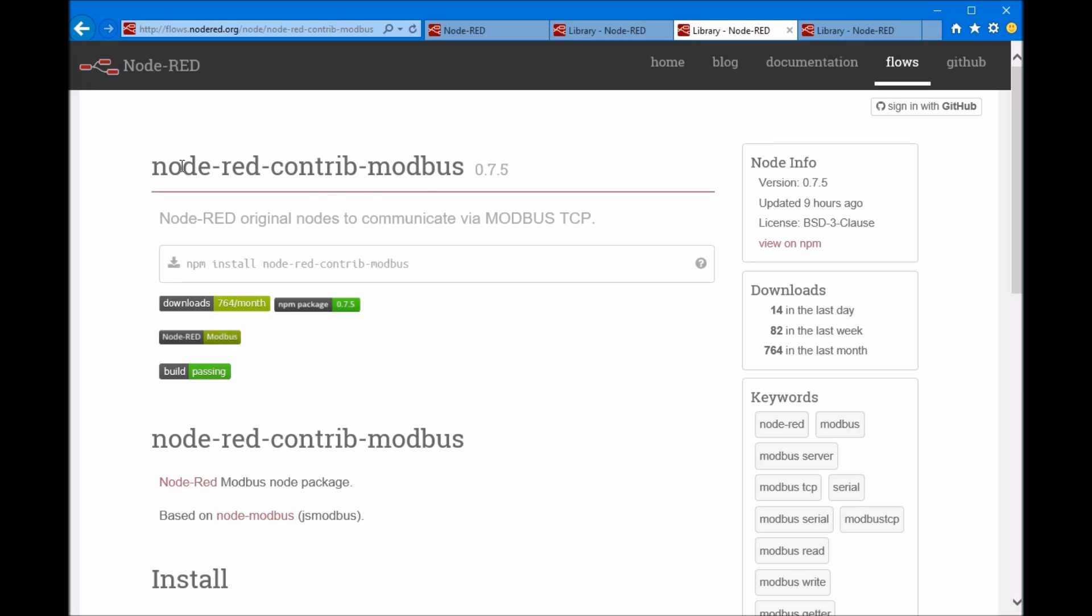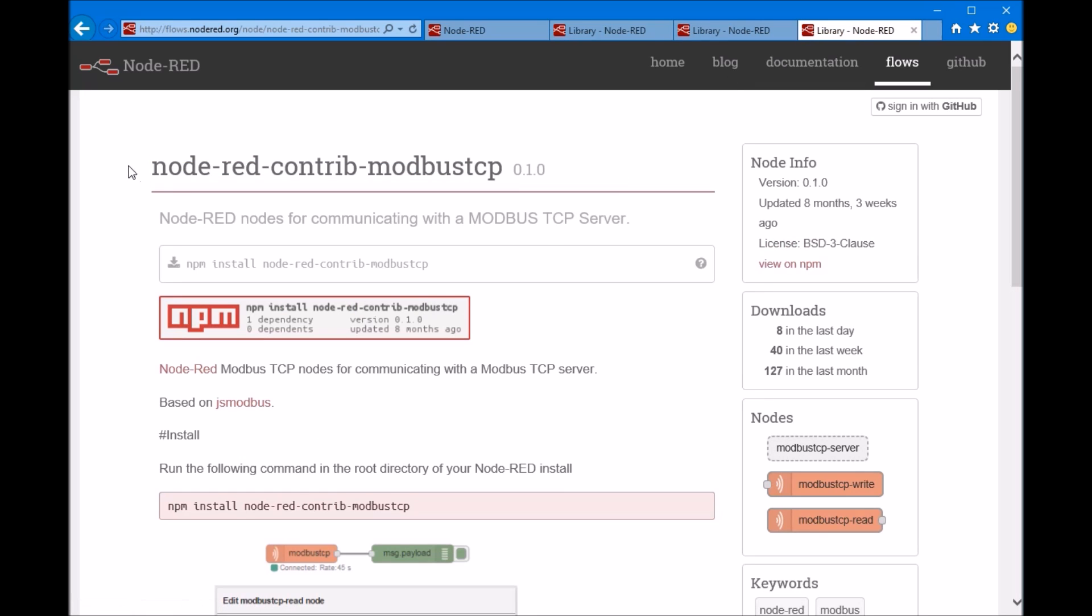Go ahead and install Node-RED contrib Modbus. This one communicates over the serial port and apparently TCP as well. There's also Node-RED contrib Modbus TCP and this one is only for TCP.